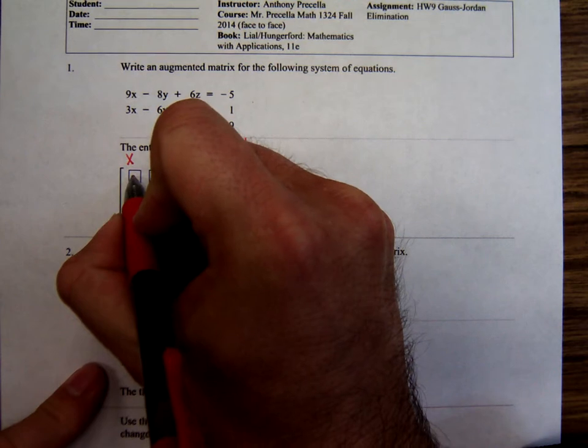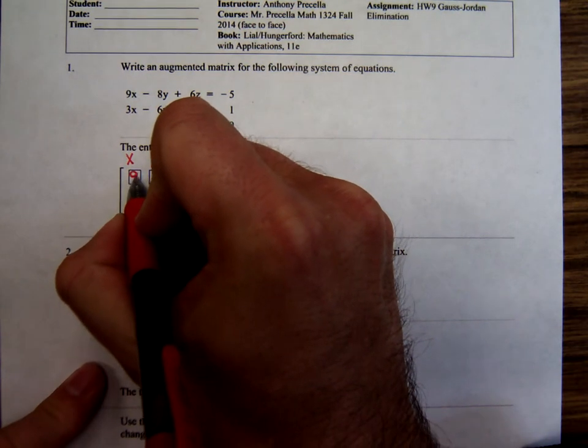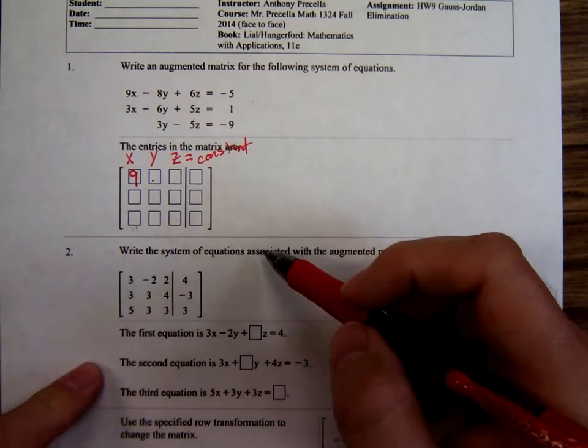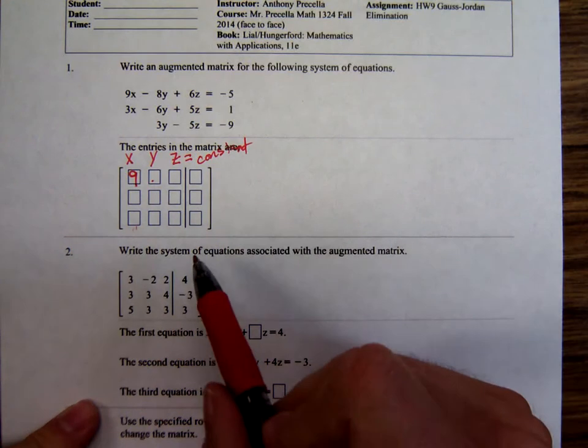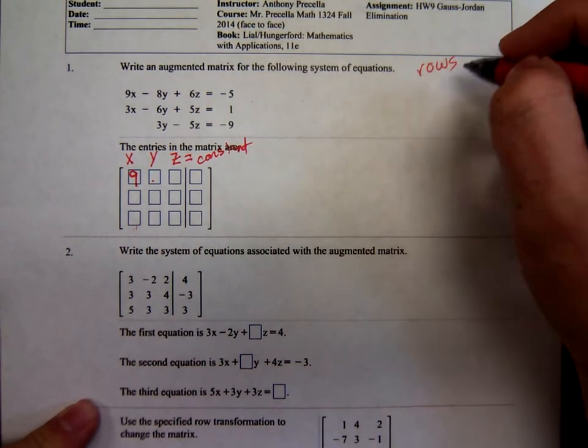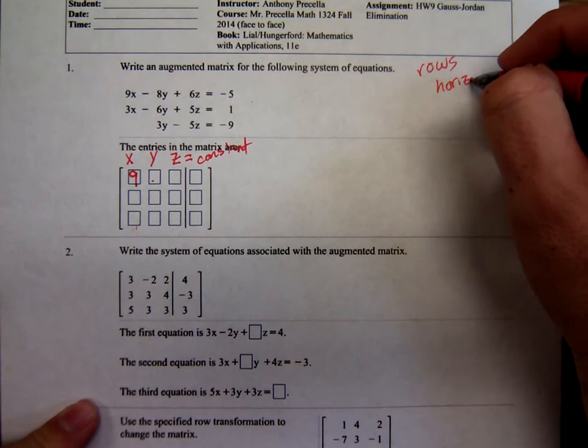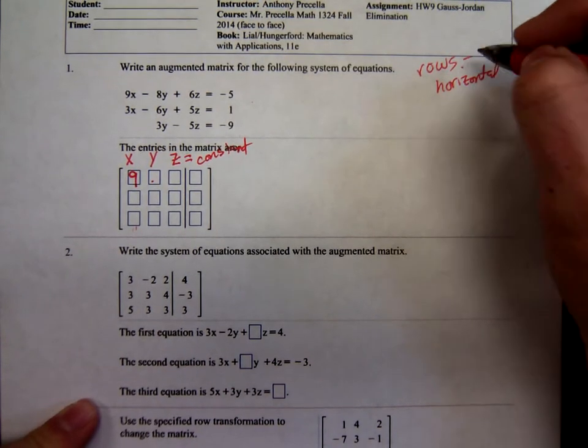So, instead of trying to write real small and fill in this box, maybe I can do that. When we talk about matrices, we talk about rows and columns. Rows are horizontal, and columns are vertical.